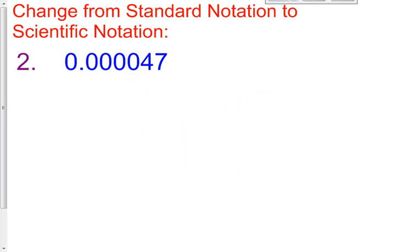Moving on to number 2, this is a very, very small number. It is a positive number, but it's just barely bigger than zero — very minute. So I'm going to turn it into scientific notation, which means I need one non-zero digit to the left of the decimal point and everything else to the right. My first non-zero digit is the number 4.